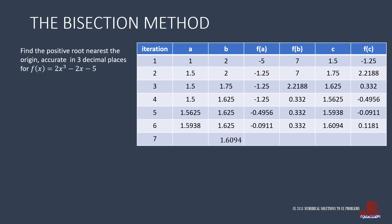We then change B to 1.6094 and its F of B becomes 0.1181. A remains the same as 1.5938 with its F of A as negative 0.0911. Compute for the average of A and B to have C as 1.6016. Then use this for F of C, giving 0.0129. Another positive F of C means that B will be replaced by C again.